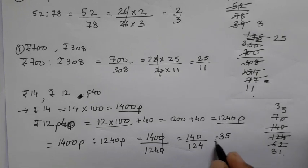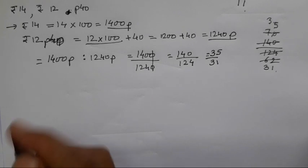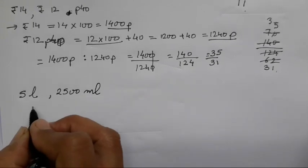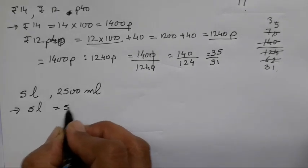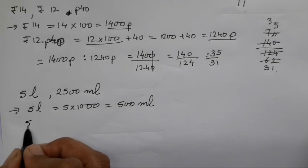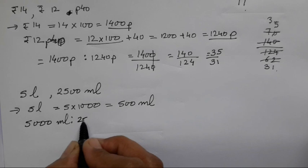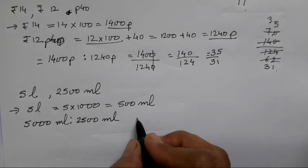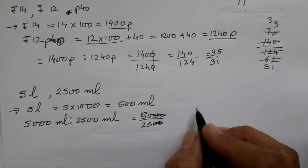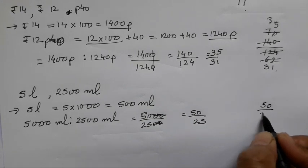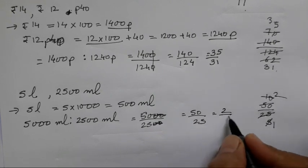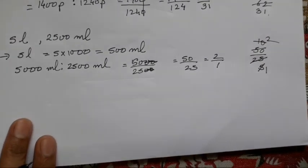The third one is 5 litres and 2500 ml. First convert 5 litres into millilitres: 5 into 1000 = 5000 millilitres. So 5000 ml as to 2500 ml. Two zeros cancel from each side giving 50 upon 25. Then 5 fives are 25 and 5 tens are 50, so 2 upon 1 is your answer.